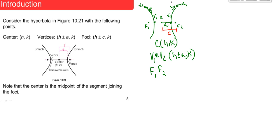If we know the center, which is (H, K), then vertex 1 and vertex 2 are found by taking the H value and adding or subtracting the A value, comma K. That gives us our vertices when this is aligned horizontally. The distance from the center to each focus is C, so the foci are at H ± C, comma K.